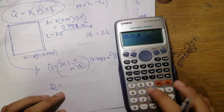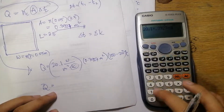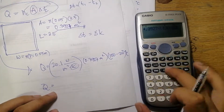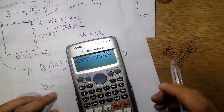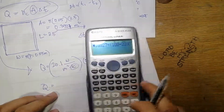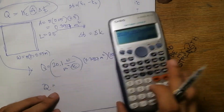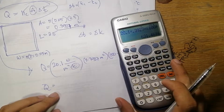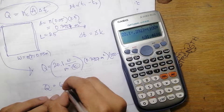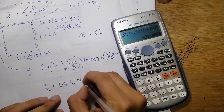Q = 20.1 multiplied by 0.3927 multiplied by (100 minus 20). Do not forget the parenthesis sign because it has a great impact on your equation. The total heat transfer is 631.46 watts.